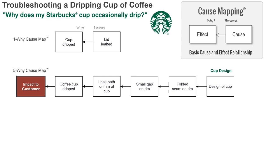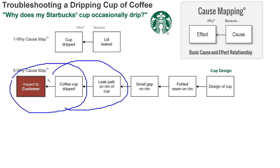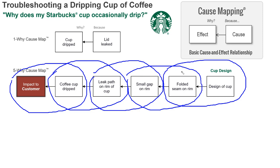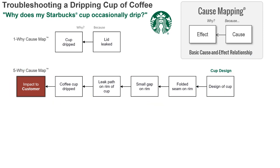This is a five-why. Five-why is a well-known problem-solving tool and part of Toyota's production system. It shows five cause-and-effect relationships — we call this a five-why cause map, same convention as the one-why and three-why. You can see how easy it is for someone to say the reason the cup leaks is because there's a folded seam on the rim, and that's because of how the cup was designed. So this whole issue appears to be a cup design problem.